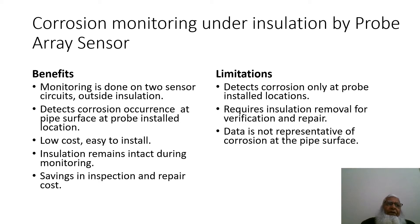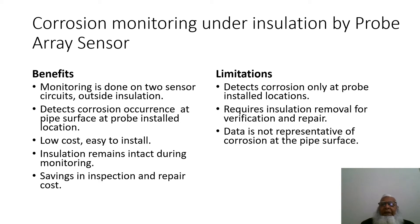Benefits of the probe array sensor: monitoring is done on two sensor circuits outside the insulation; detects corrosion at the pipe surface at probe-installed locations; low cost, easy to install, insulation remains intact during monitoring, saving inspection and repair costs. Limitations: detects corrosion only at probe-installed locations; requires insulation removal for verification and repair; data is not representative of corrosion at the full pipe surface.